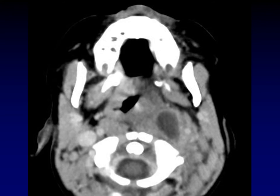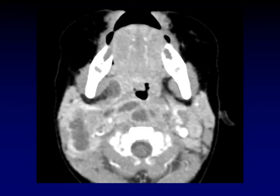Sometimes lymph nodes get overwhelmed by infection and form an abscess — this is called suppurative adenitis or suppurative adenopathy, seen almost exclusively in children. Here is a low-density mass with rim enhancement right where we'd expect a retropharyngeal lymph node, elevating the parapharyngeal fat predominantly anteriorly and a little bit laterally. If the infection escapes the lymph nodes and starts spreading through the retropharyngeal space, we get a retropharyngeal abscess, displacing the parapharyngeal fat predominantly anteriorly.